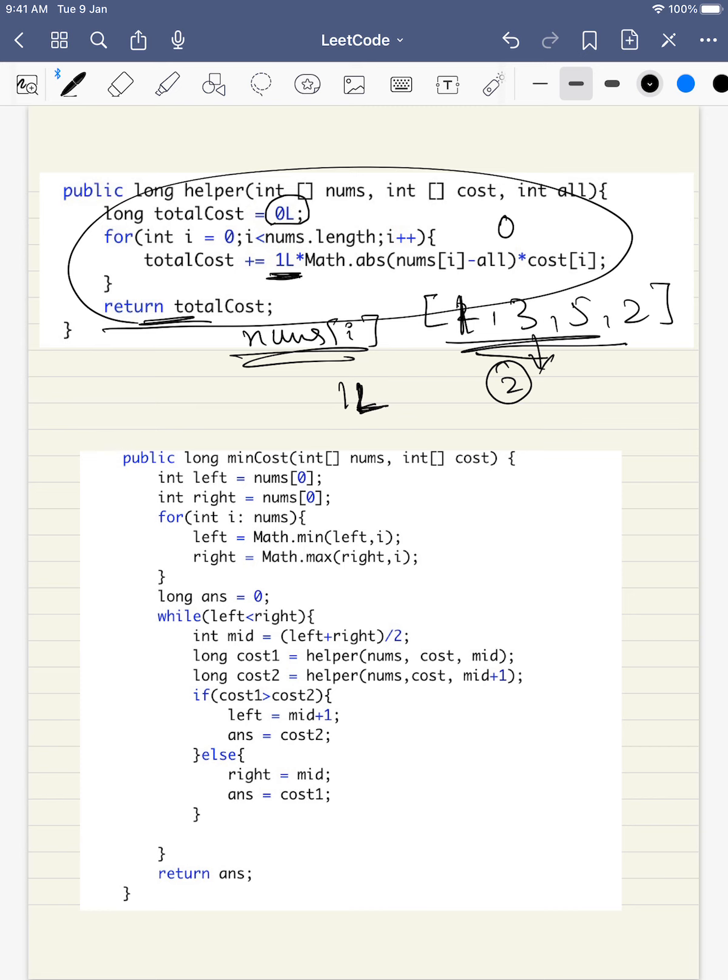We know calculating the cost is the first step using a helper class. Then we know the range will be equal to minimum and maximum values we can get from the array. Now we know the range, for example 1 and 5.